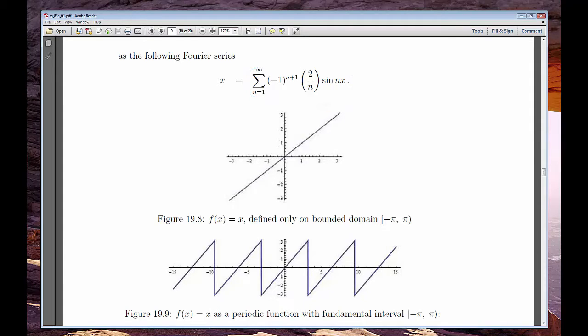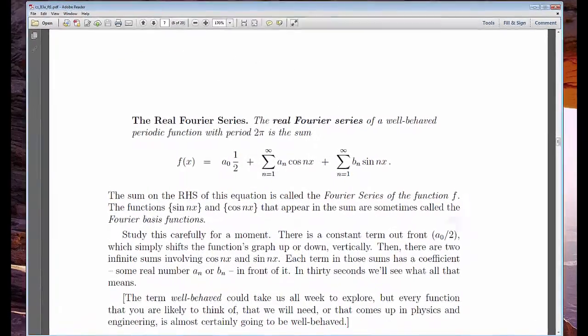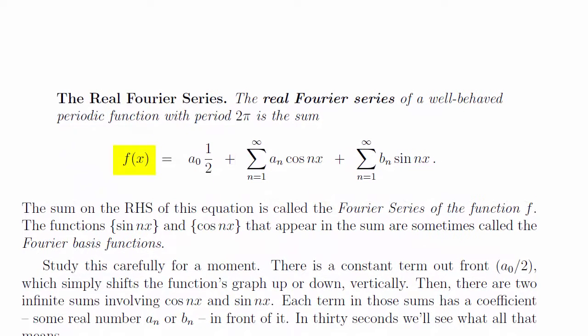Accepting that reality for the moment, we stand back and look at what it all means. We start out with a function that can be practically anything, within reason, and end up with the sum of sines and cosines. For different functions, we get different sums, but they're always built up from those exact same sines and cosines. The only things that change from function to function are the coefficients of those curvy building blocks, the two sequences a sub n and b sub n.